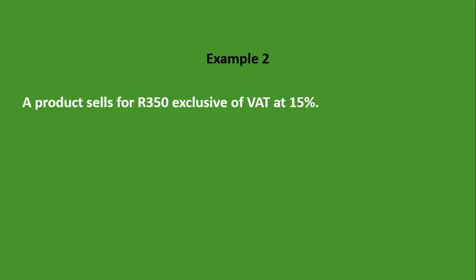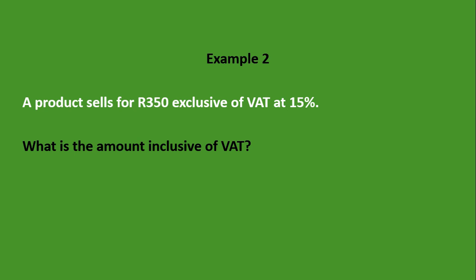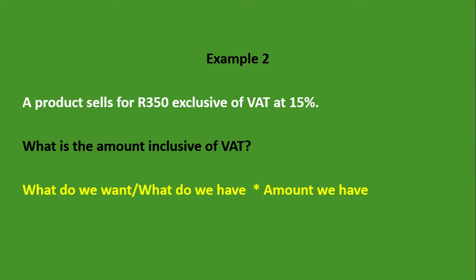Let's look at the second example. A product sells for 350 rand exclusive of VAT at 15 percent. What is the amount inclusive of VAT? Using our formula: what do we want? The amount inclusive of VAT, which is 115 percent — because the product is 100 percent plus VAT of 15 percent. What do we have? We have 350 rand, which is 100 percent because it's exclusive of VAT. So the formula is: 115 divided by 100, times 350 rand, giving us a total of 402.50 rand.